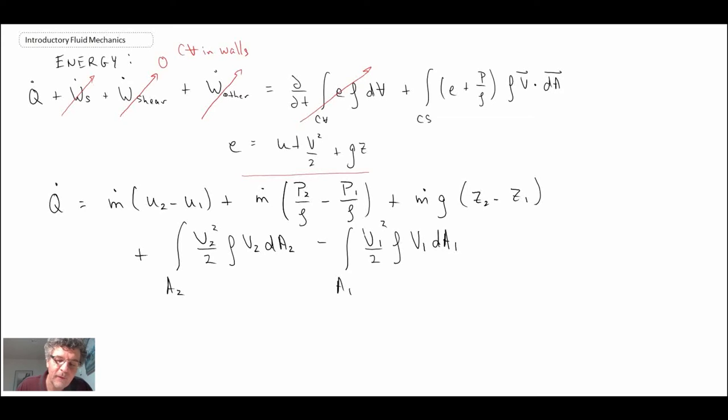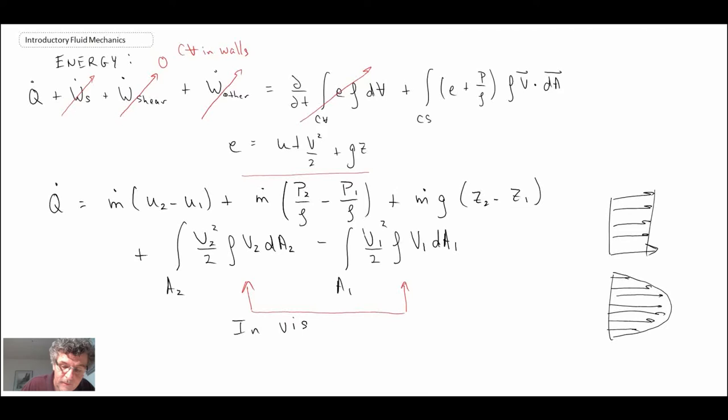With the terms involving the kinetic energy flowing into and out of the control volume, I've left those in integral form, and there's good reason for that. The reason is when we're dealing with viscous flows, we don't have the nice characteristic uniform velocity profile that we had when we did our other control volume analysis. When dealing with viscous flows, you're going to have some sort of velocity profile, and consequently you need to take that into account and integrate across the profile.